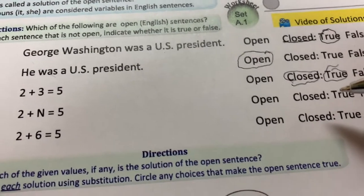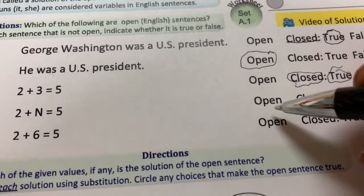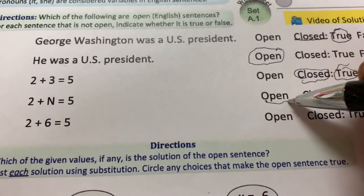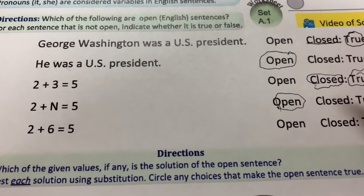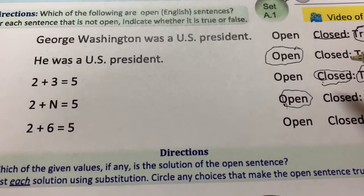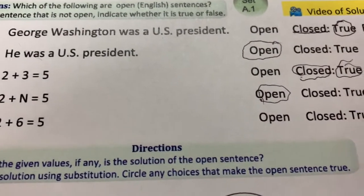2 plus N equals 5. That is an open sentence. Because we could put values in for N. We could put the right answer for N, 3. That would be a solution or any other thing. So, that is open.